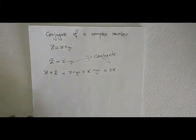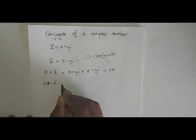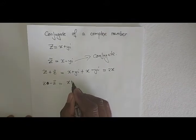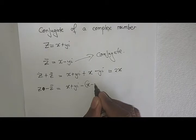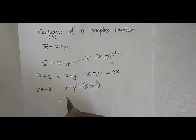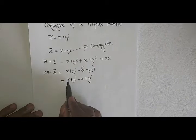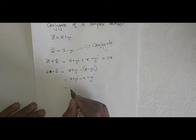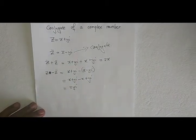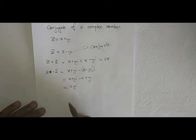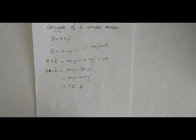Similarly, if you subtract the conjugate from the complex number — Z minus Z-bar — it equals X plus Yi minus the bracket X minus Yi, which expands to X plus Yi minus X plus Yi. The X terms cancel, leaving 2Yi. So when you subtract a complex conjugate from its complex number, you get 2Yi. These are very important results.